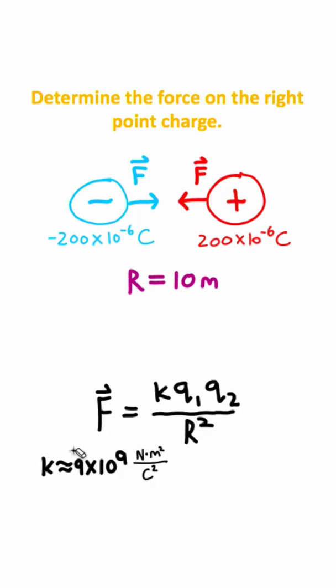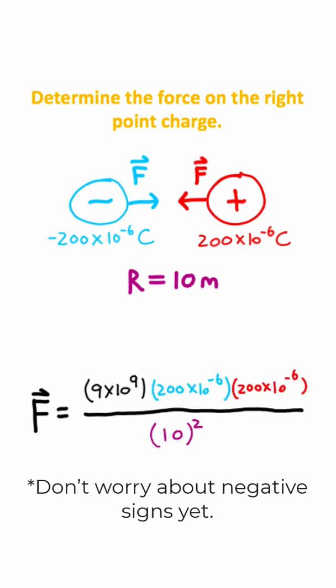This is Coulomb's law. K is this constant value right here. So if you take this constant value and plug it in for K, all you need to do is take your two point charges and plug them in right here, and then take your distance and plug it in for R. This will give you this equation right here.